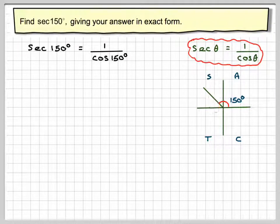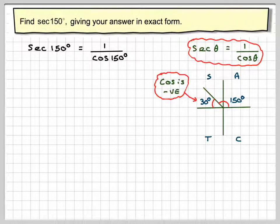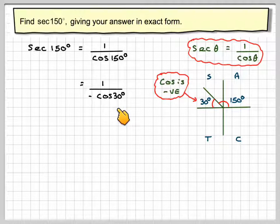Only sine is positive in the second quadrant. Then the equivalent acute angle is 30 degrees, but we have to remember that cos will be negative. So this will become 1 over minus cos of 30 degrees.